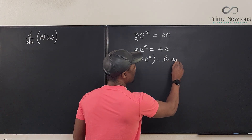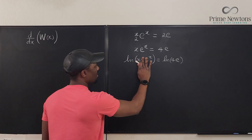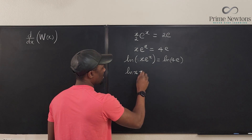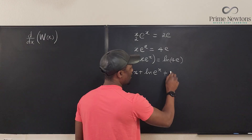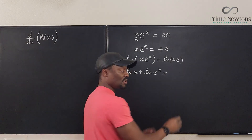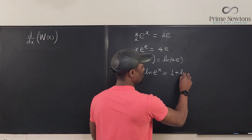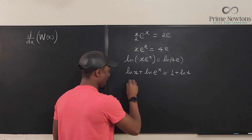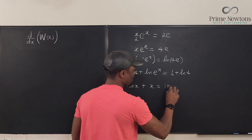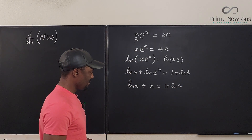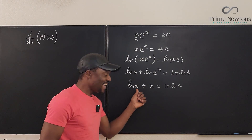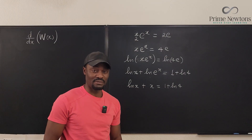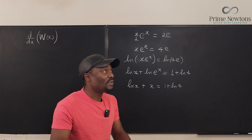Taking ln of X·e to the X: we split it as ln(X) plus ln(e to the X), which equals ln(4) + 1 from the right-hand side. Bringing the exponent down, we get ln(X) + X equals 1 + ln(4). Now X is stuck — it appears both inside the natural log and outside it — and no matter how hard you try, you will never isolate this X using elementary algebra.